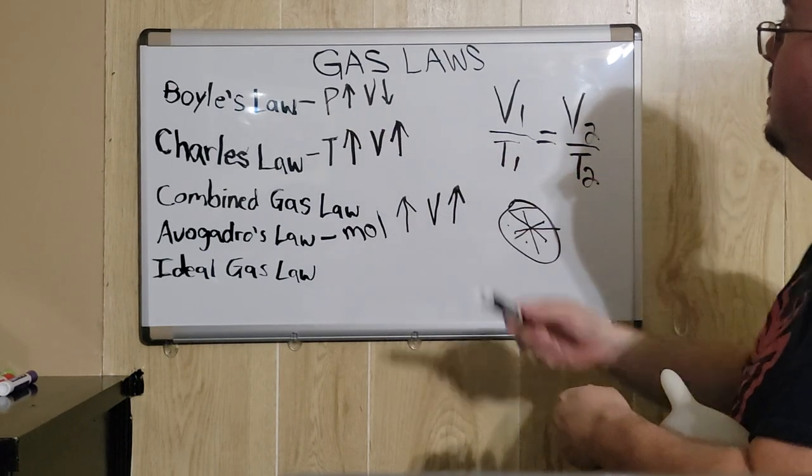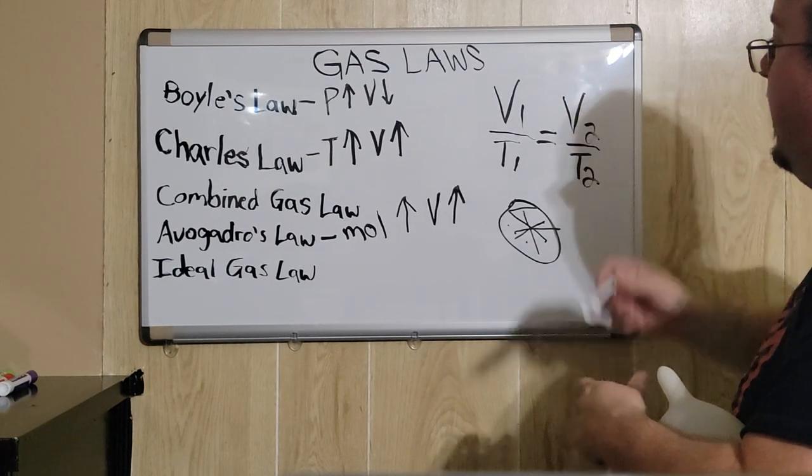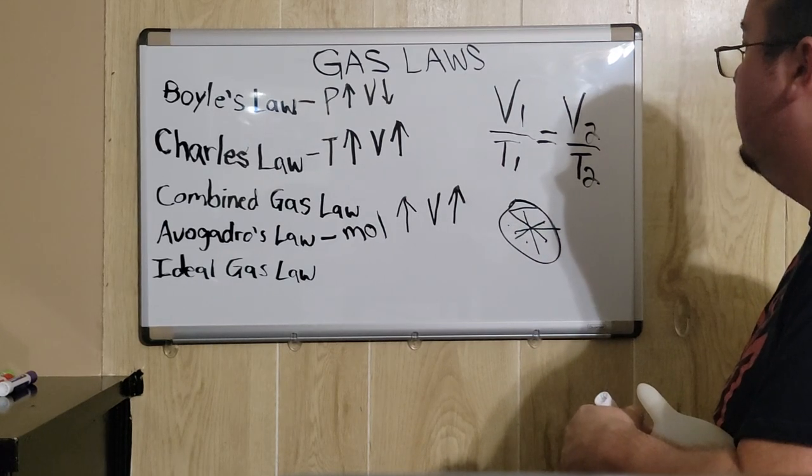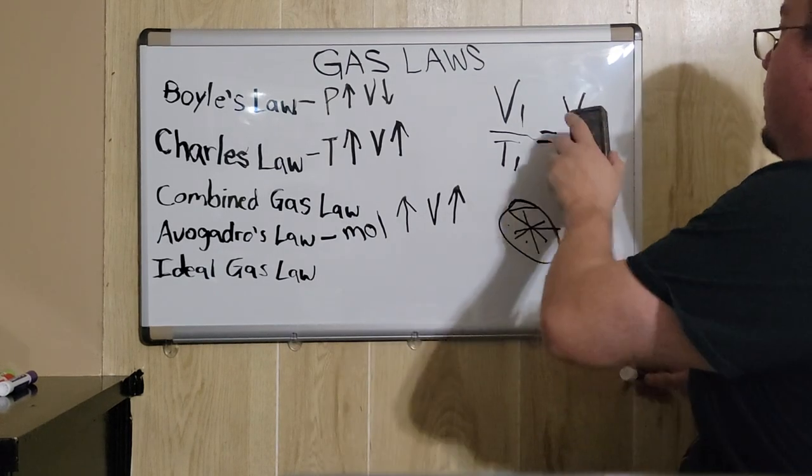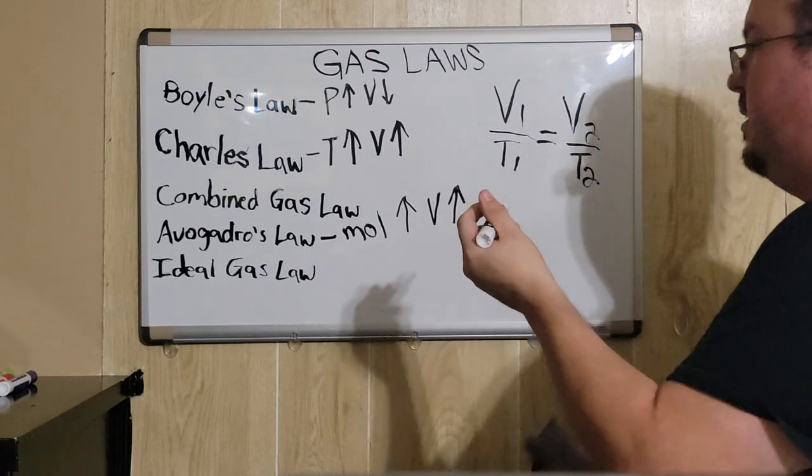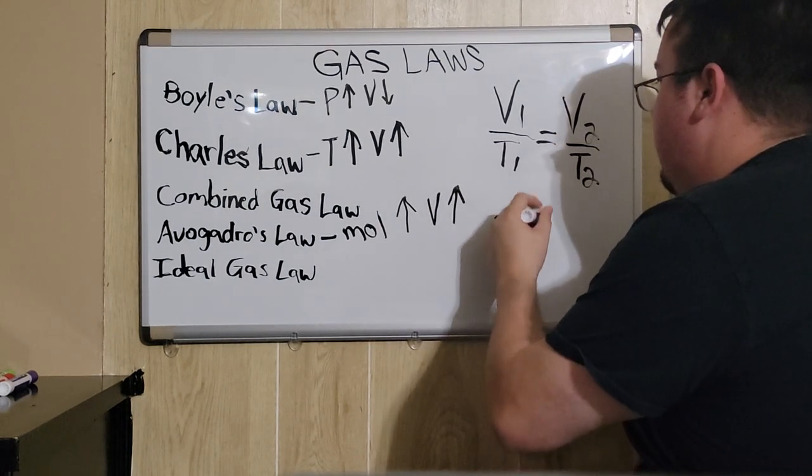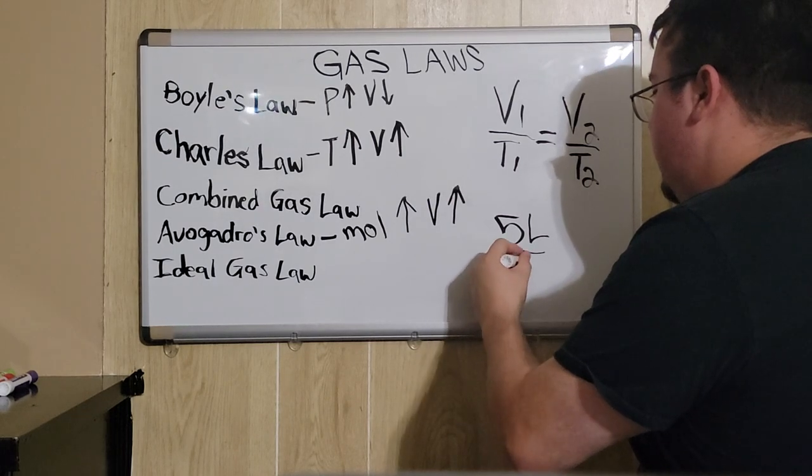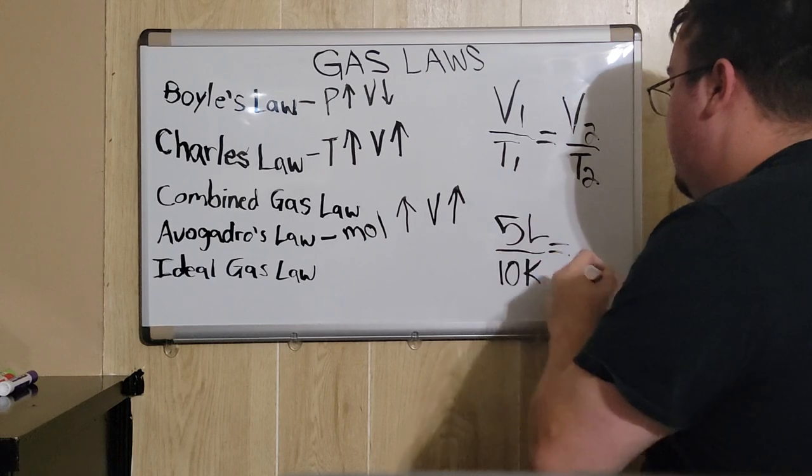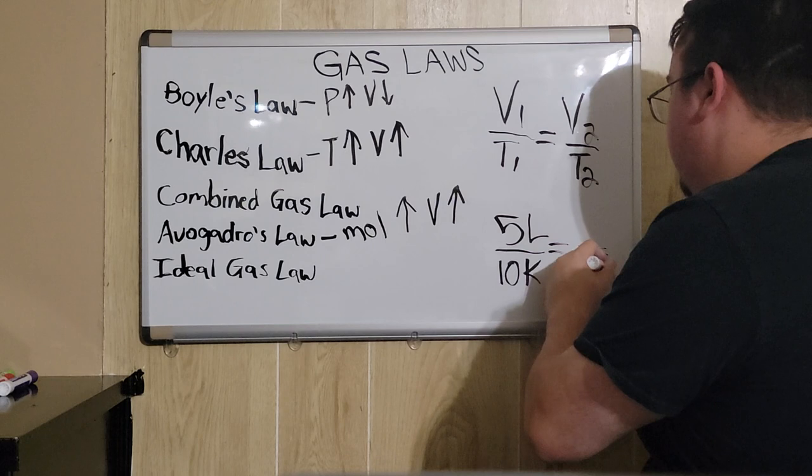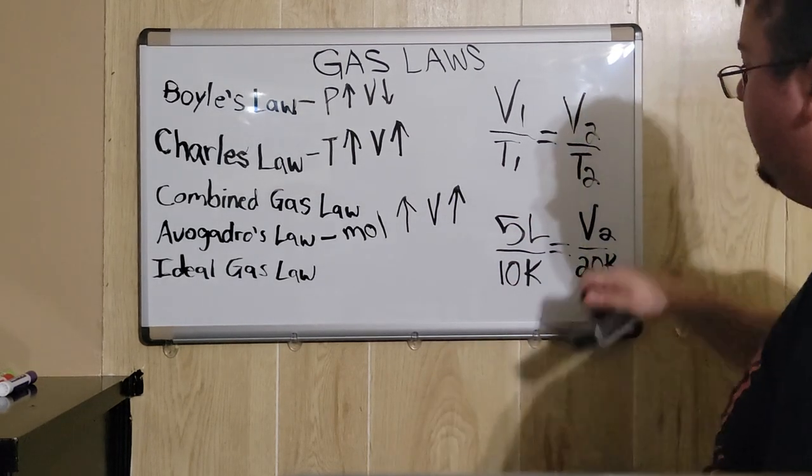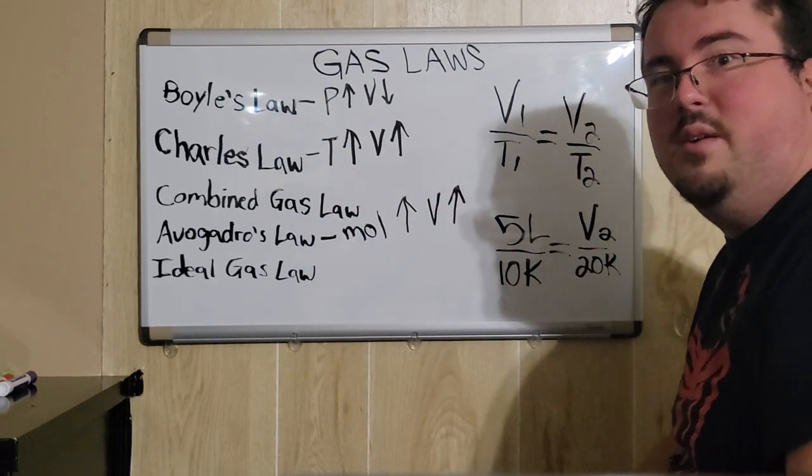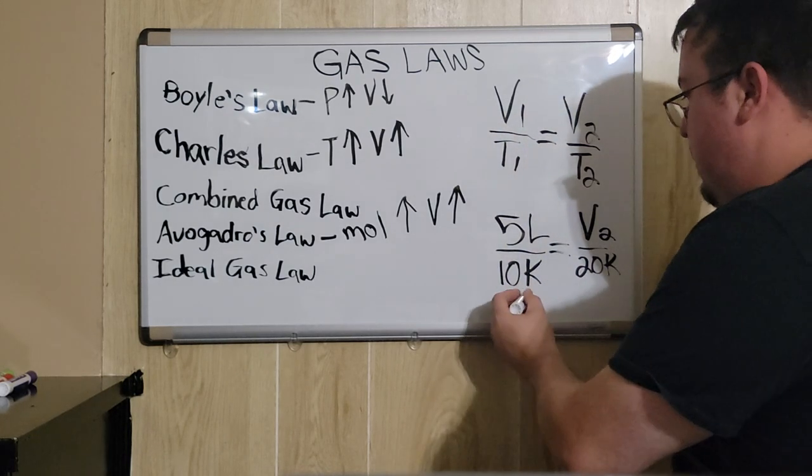Just like with Boyle's law, if you know three of the factors, you can isolate a given factor and be able to solve for it. Let's say you do know that the volume was 5 liters and it was at 10 Kelvin, but then suddenly the temperature increased to 20 Kelvin. Now, you can isolate for what the volume would be at that 20 Kelvin. When it comes to temperature, when you're dealing with gases, they must always be in Kelvin.